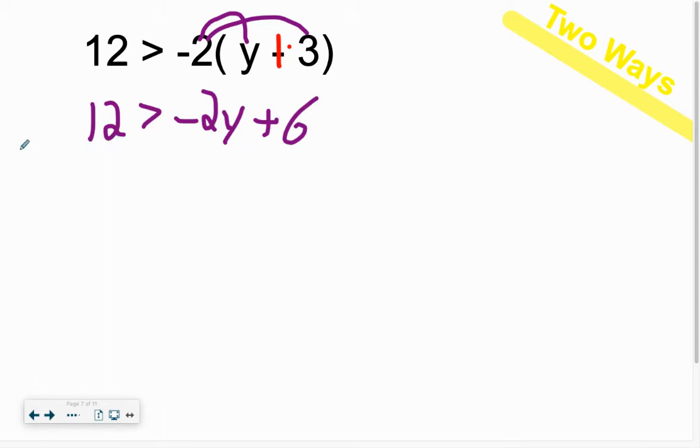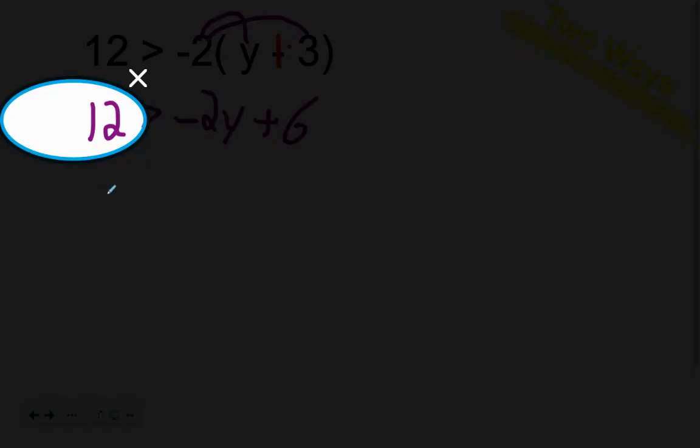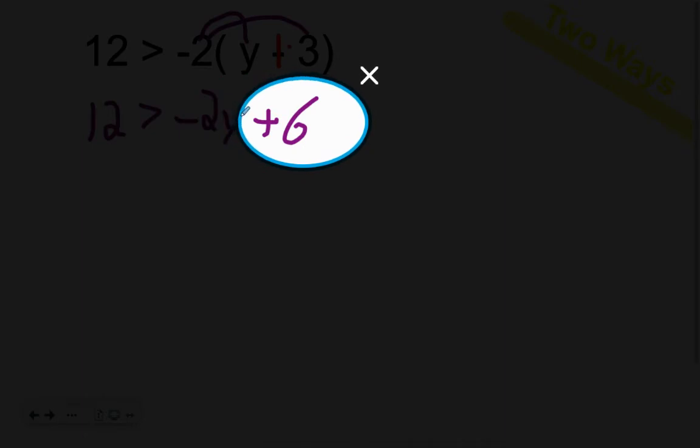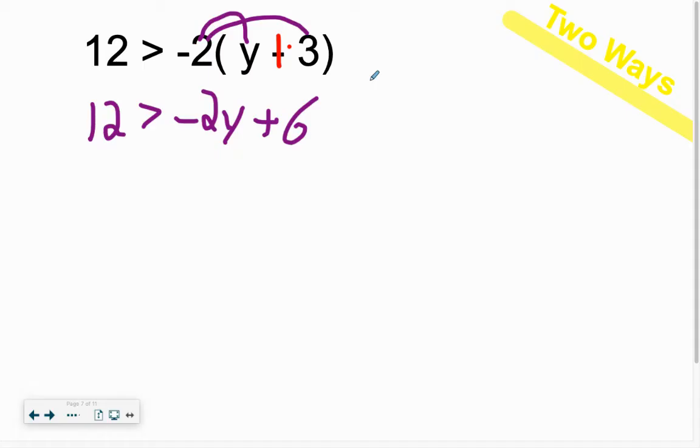Now that we've distributed, here we are. Find what side the variable is on. It's not on the left side, that's okay, don't panic. Find the side with the variable, ignore it. Cover up the negative 2 and Y. Step 1 is add. To get rid of adding positive 6, add negative 6. If you do that to the right side, journey all the way to the left. Watch your signs.